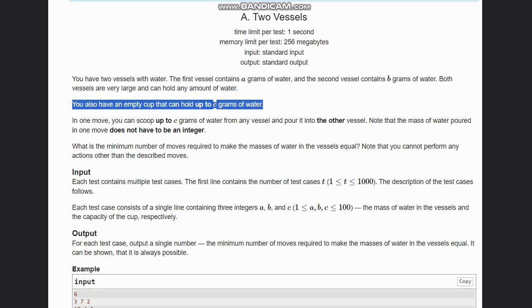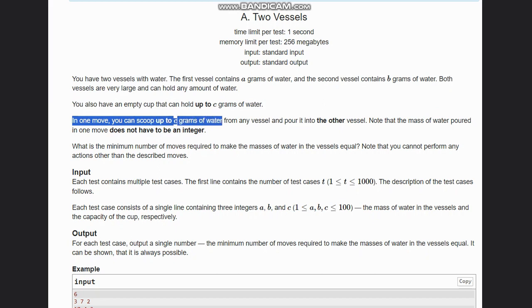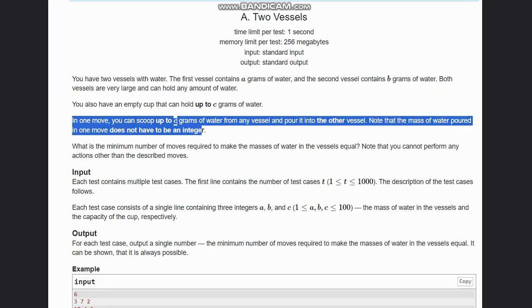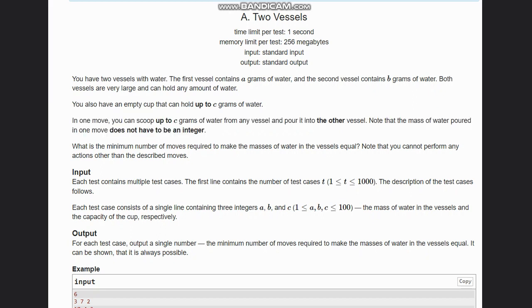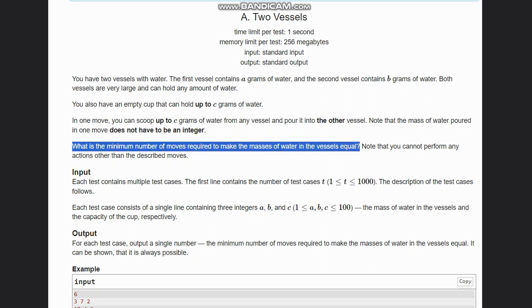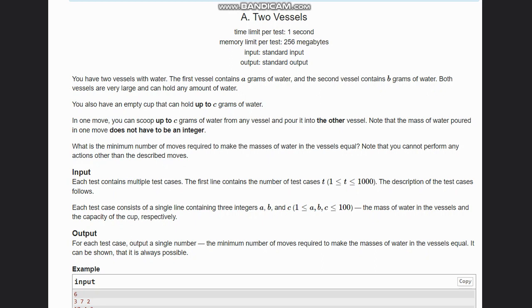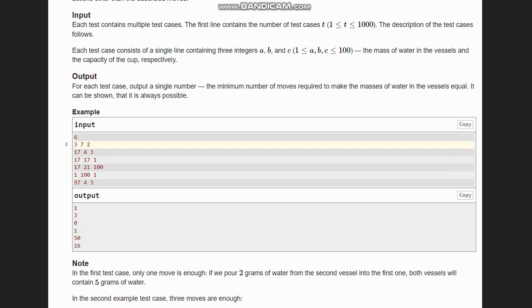You also have an empty cup that can hold up to c grams of water. In one move you can scoop up to c grams of water from any vessel and pour it into another vessel. Note that the mass of water poured in one move does not have to be an integer. So what is the minimum number of moves required to make the mass in the vessels equal? And we cannot perform any actions other than the described moves.